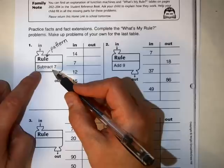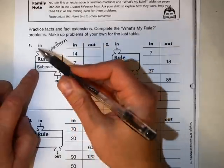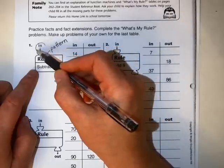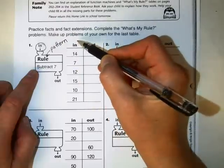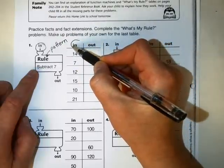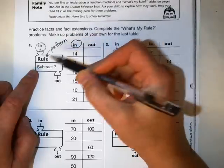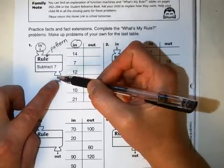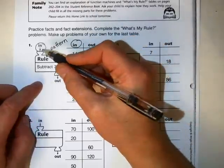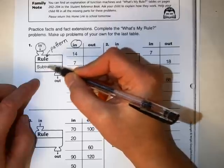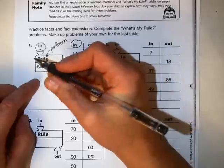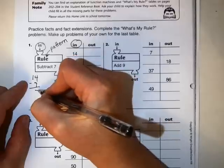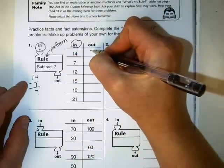Well it tells you the pattern is to subtract 7. So if you put a certain number in, hopefully you're looking right up where I'm showing you how to do this. If you put a certain number in, and it tells you which numbers you're putting in, you're going to do the pattern to it, which is subtract 7, do the rule, subtract 7, and what number comes out? Well, if I put 14 into this box, and 7 gets taken away or subtracted, it's going to look like 14 minus 7. And I know the answer to that is 7.